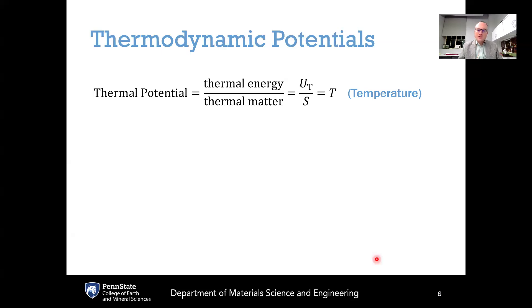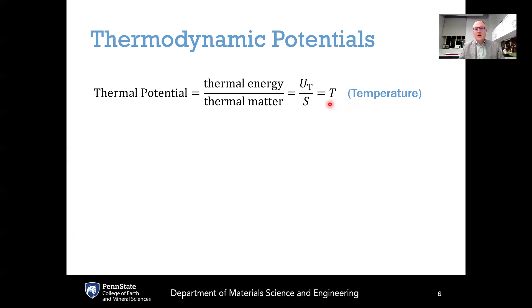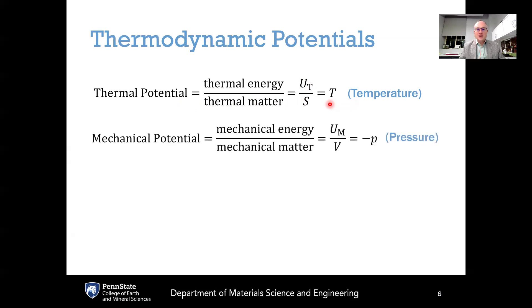Going back to our thermodynamic potentials: starting with thermal energy, if we divide the amount of thermal energy U_T by the amount of thermal matter — the entropy S — we get the thermal potential. Both thermal energy and thermal entropy are extensive quantities, so dividing them gives an intensive quantity: the thermal potential, which is better known as the temperature T of the system. Temperature is simply the amount of thermal energy divided by the amount of thermal matter.